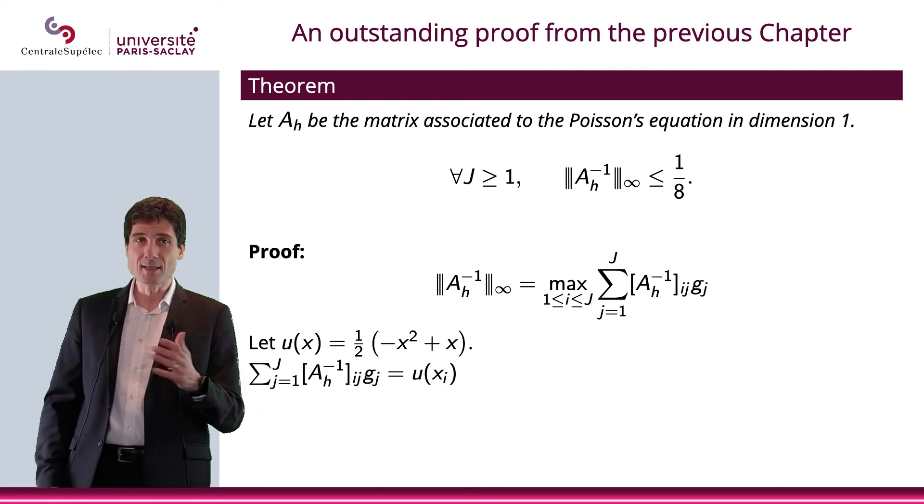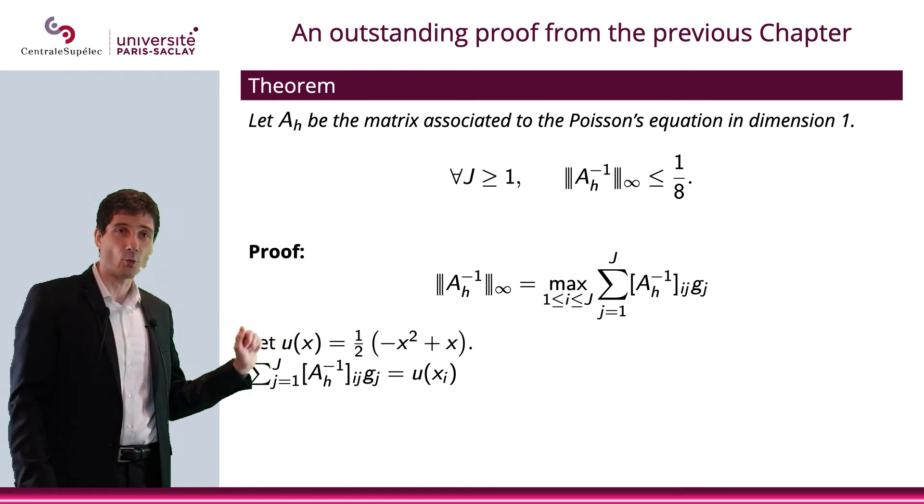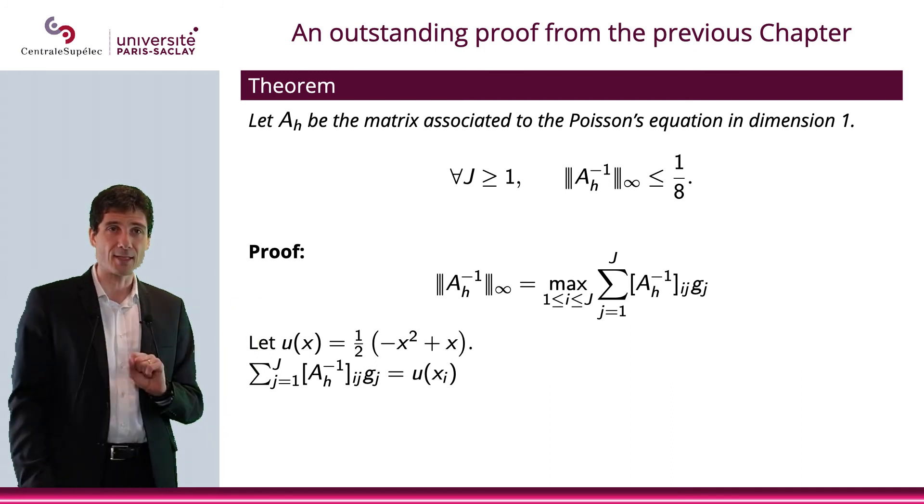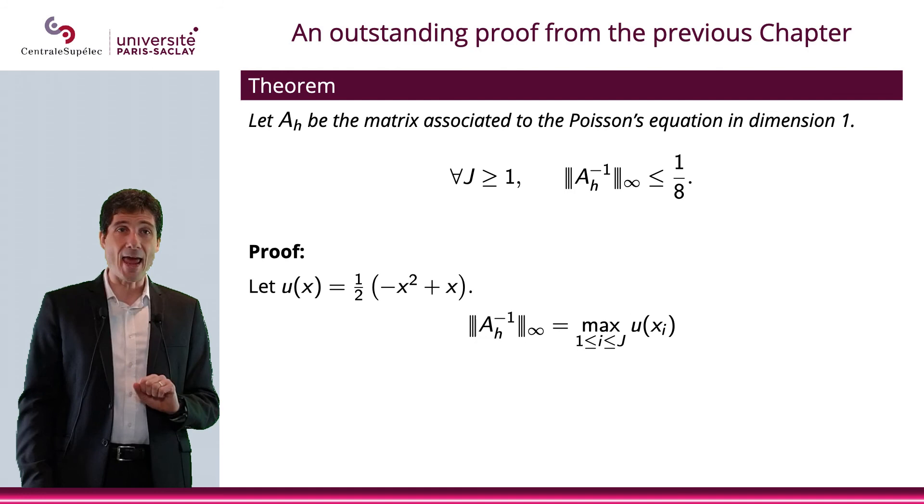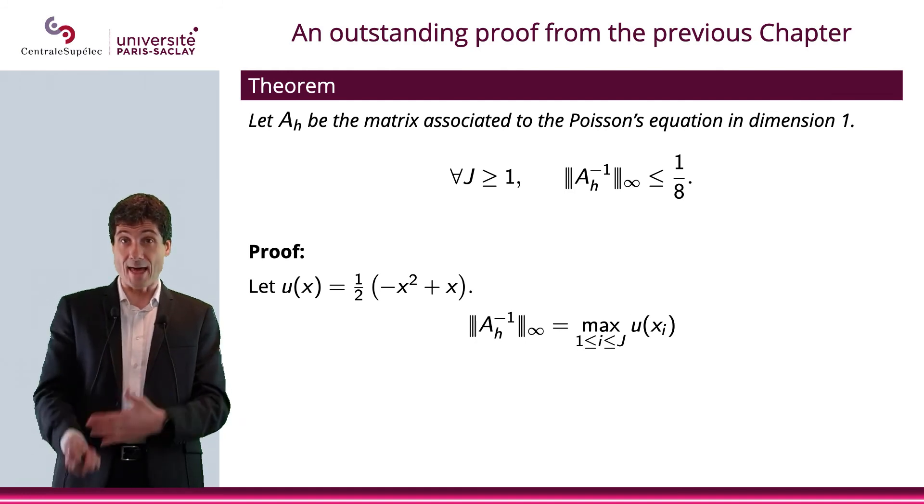Okay, so let's put this in nice form. I have u of x, which is 1 half of minus x squared plus x. Okay, let's put this in. Then I have A_H inverse infinity, which is the maximum of the u x_i.